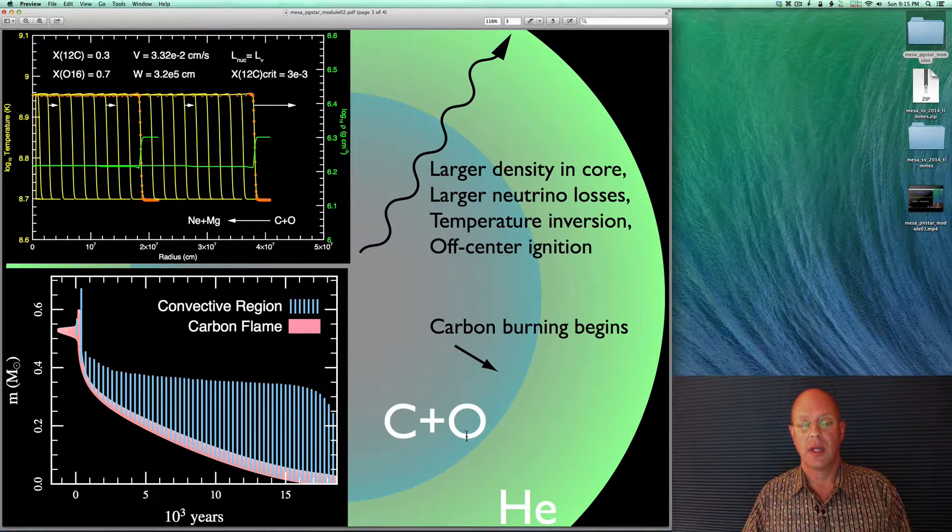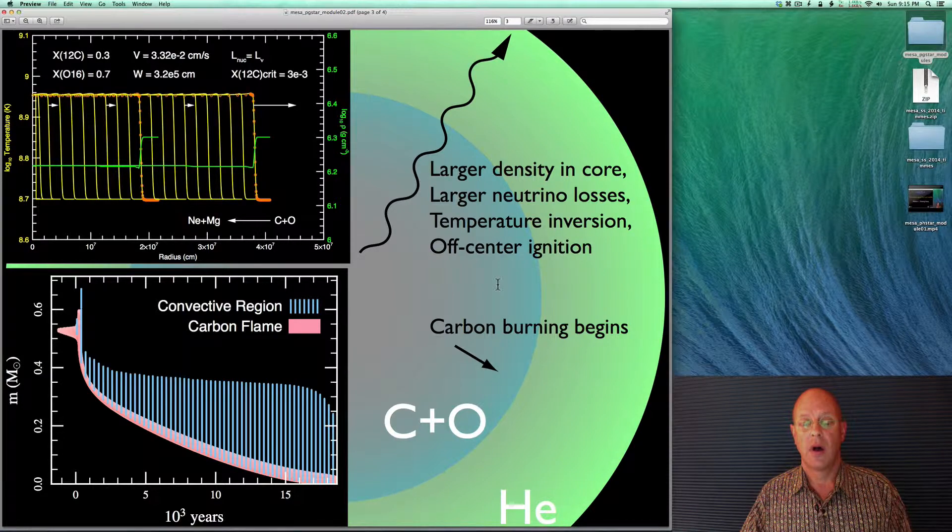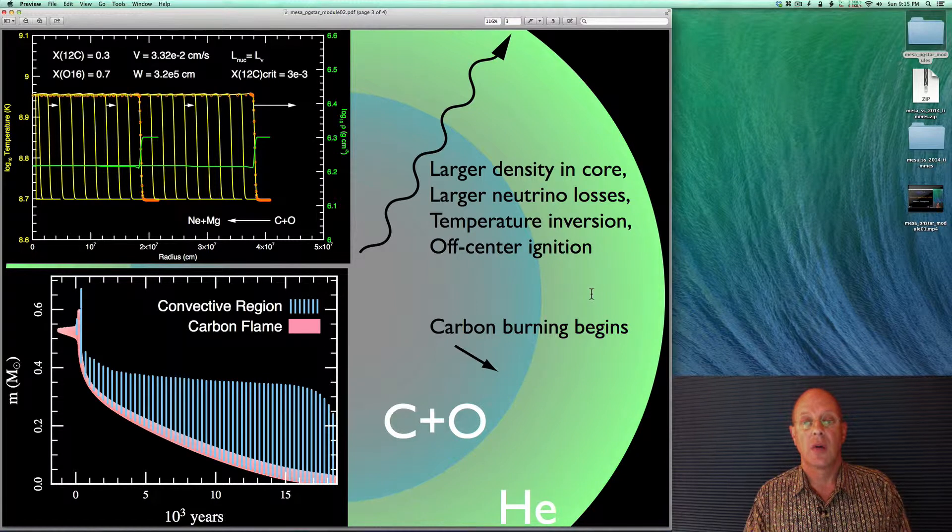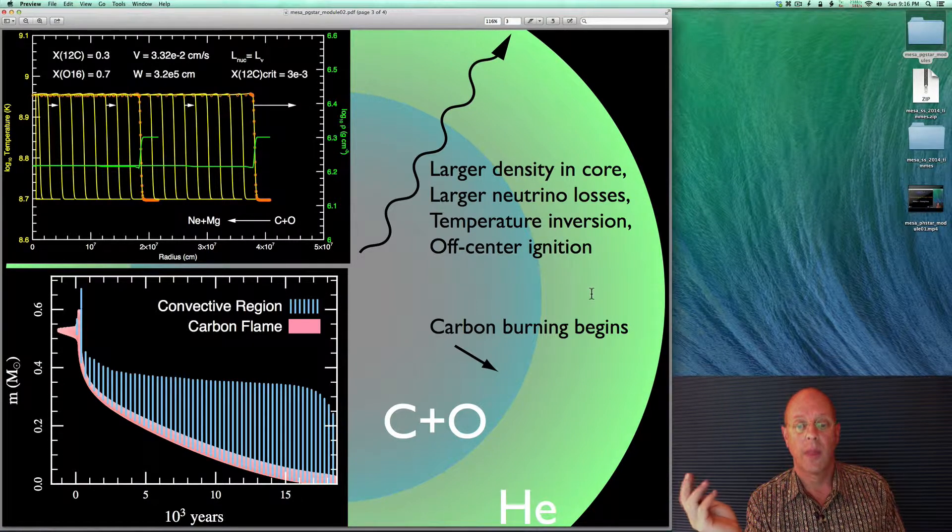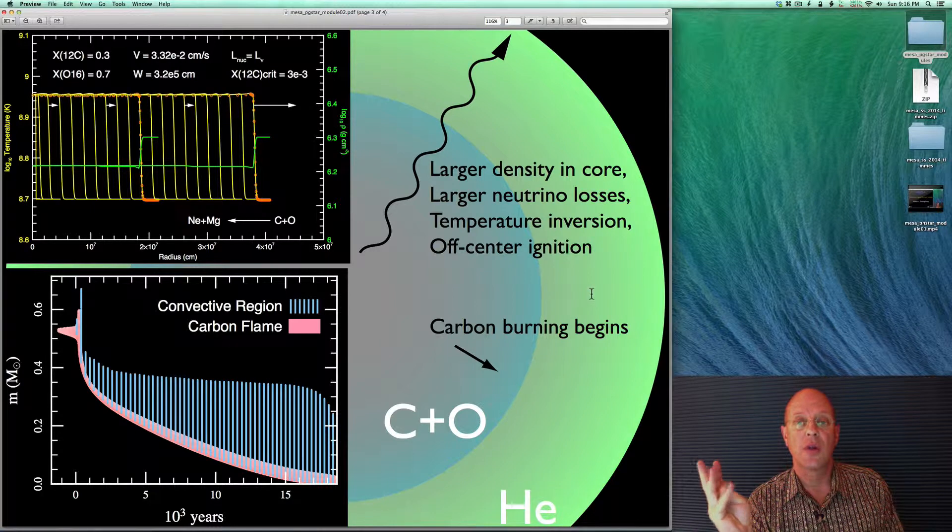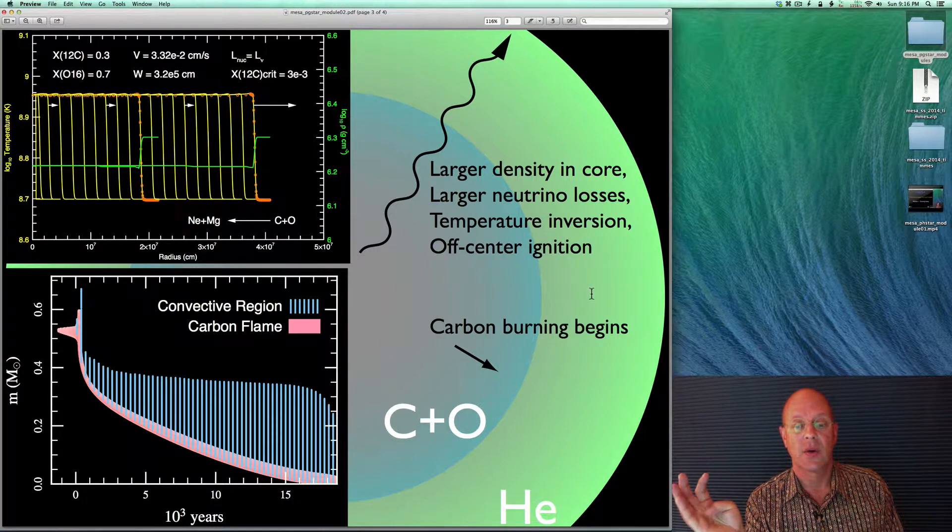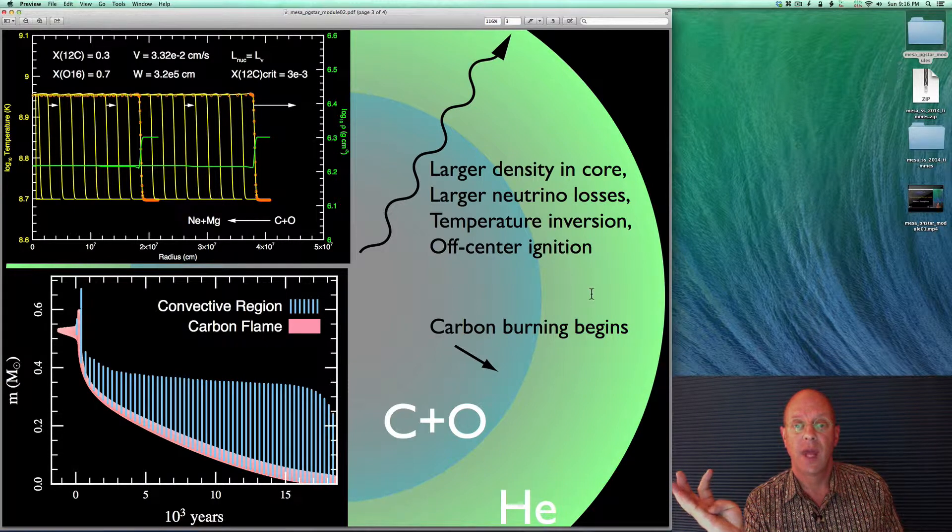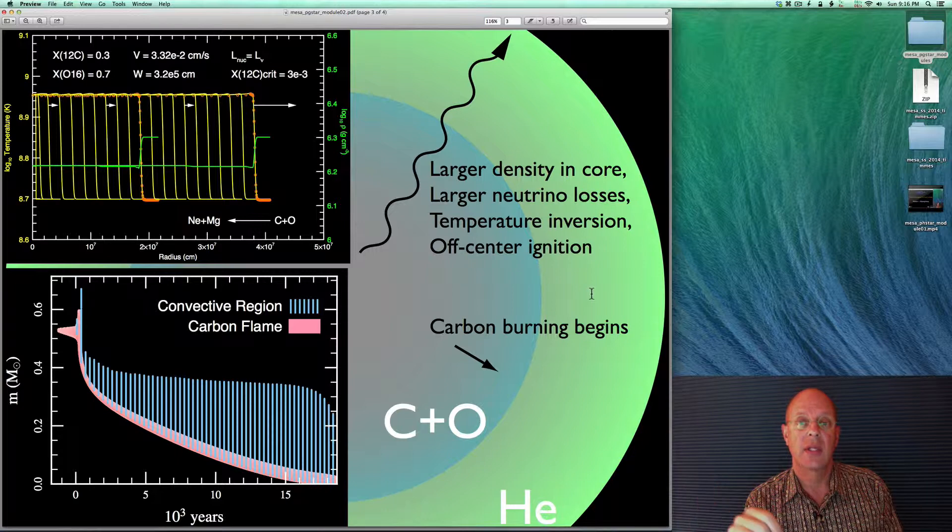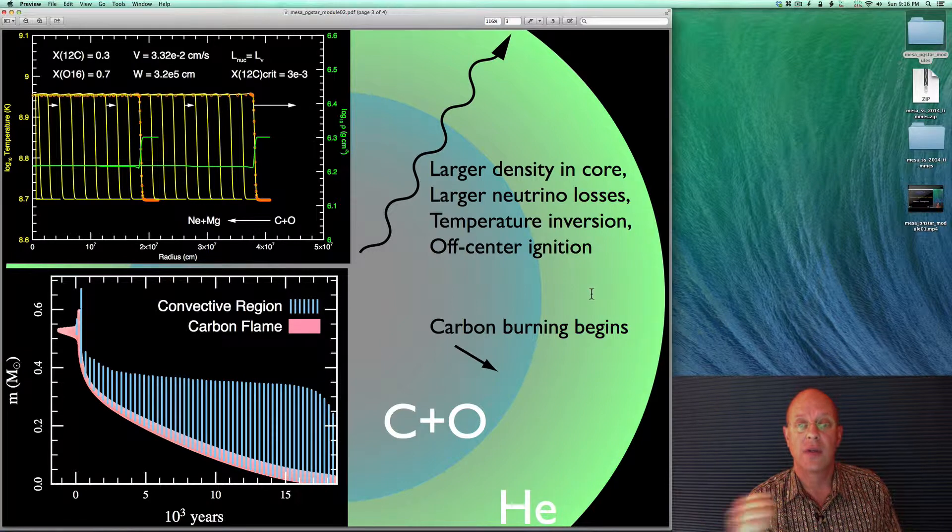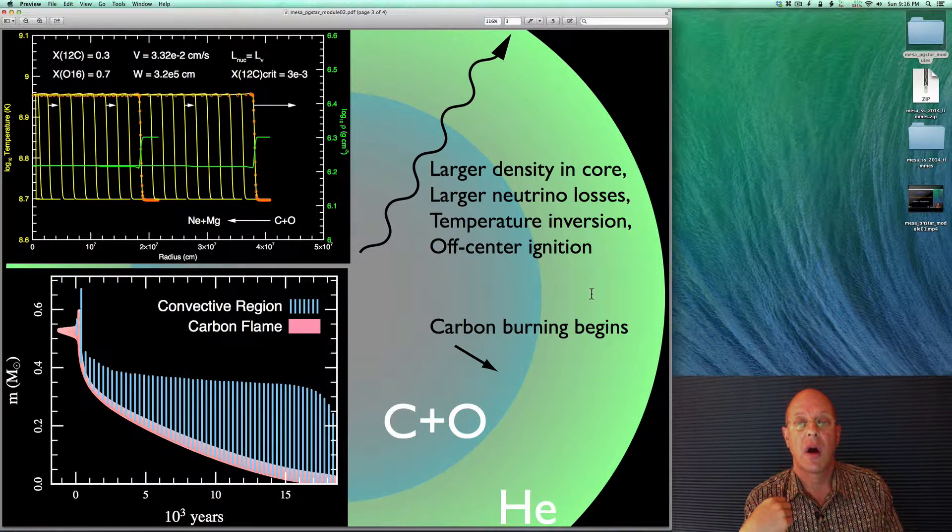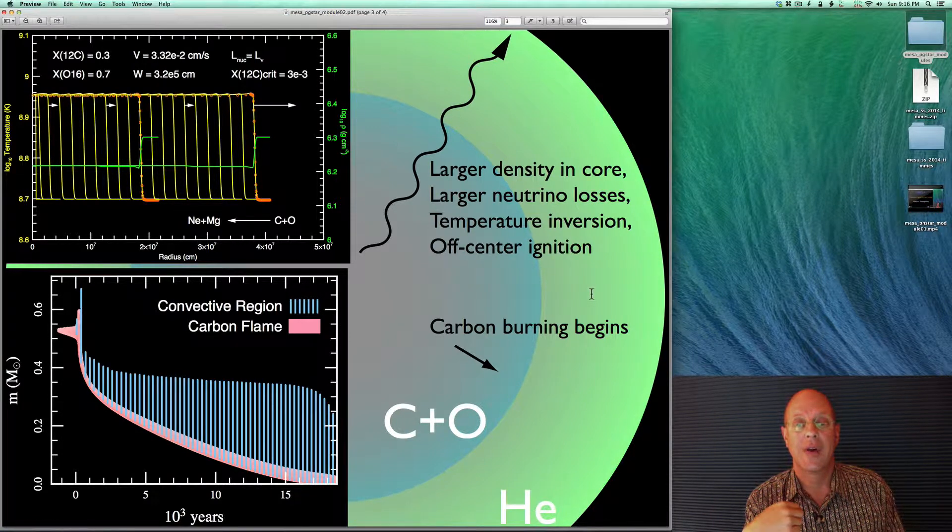Here on the right-hand side, we have our carbon-oxygen core, and then outside of that, we have our helium burning shell. Of course, the largest density is in the core, but because the thermal neutrino losses go at least as the density squared, the neutrino losses, cooling, is larger in the center. Therefore, the hottest temperature is not at the center of the carbon-oxygen core, but it's off-center. You have a thermal inversion, a temperature inversion. And therefore, if carbon ignites, it's going to ignite off-center.